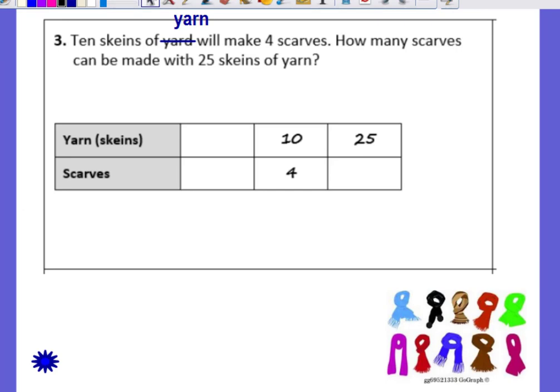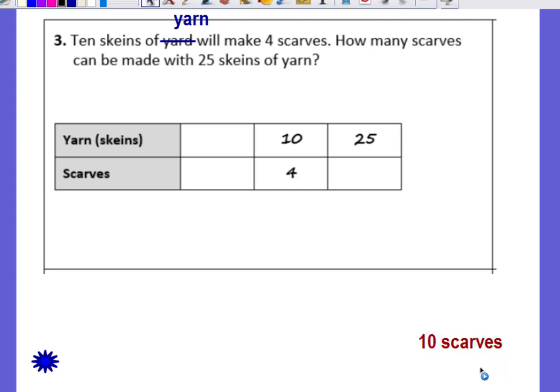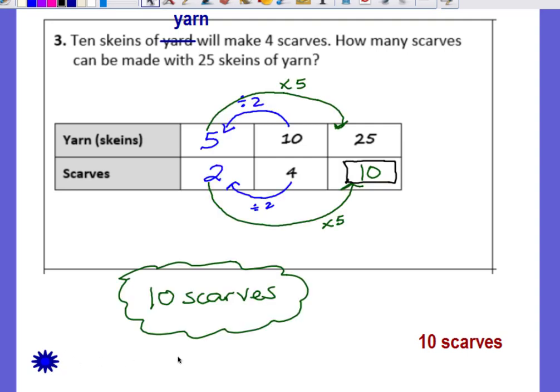Okay problem number three. Yes there was a typo for number three. It should be 10 skeins of yarn not yard. 10 skeins of yarn will make four scarves. How many scarves can be made with 25 skeins of yarn? Okay for your answer did you get 10 scarves? If you did great job, move on to the next problem. If not, take a look at the work shown and see if you can find your mistake. Once you find your mistake go on to problem number four. If you still don't know what you did wrong ask your teacher.